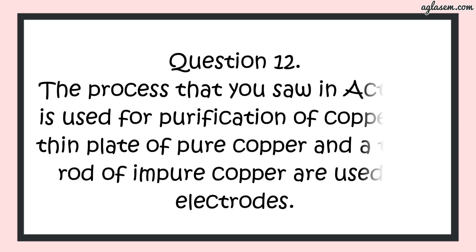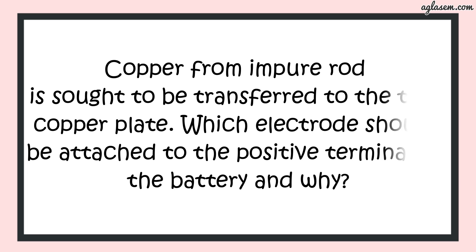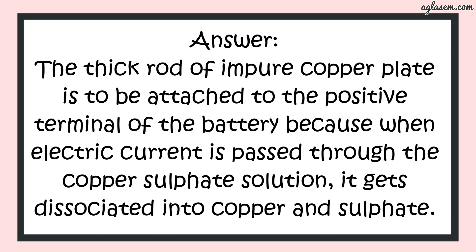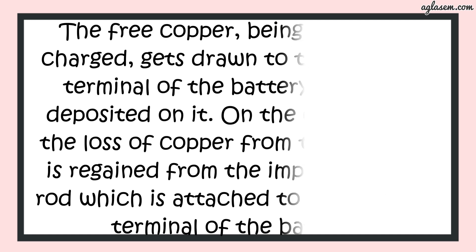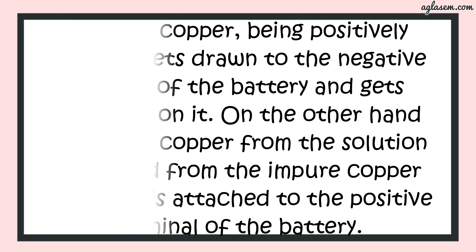Question number 12 says: the process you saw in an activity is used as purification of copper. A thin plate of pure copper and a thick rod of impure copper are used as electrodes. Copper from the impure rod is sought to be transferred to the thin copper plate. Which electrode should be attached to the positive terminal of the battery and why? The answer is: the thick rod of impure copper is to be attached to the positive terminal of the battery because, when electric current is passed through copper sulphate solution, it gets dissociated into copper and sulphate. The free copper, being positively charged, gets drawn to the negative terminal of the battery and gets deposited on it. The loss of copper from the solution is regained from the impure copper rod which is attached to the positive terminal of the battery.